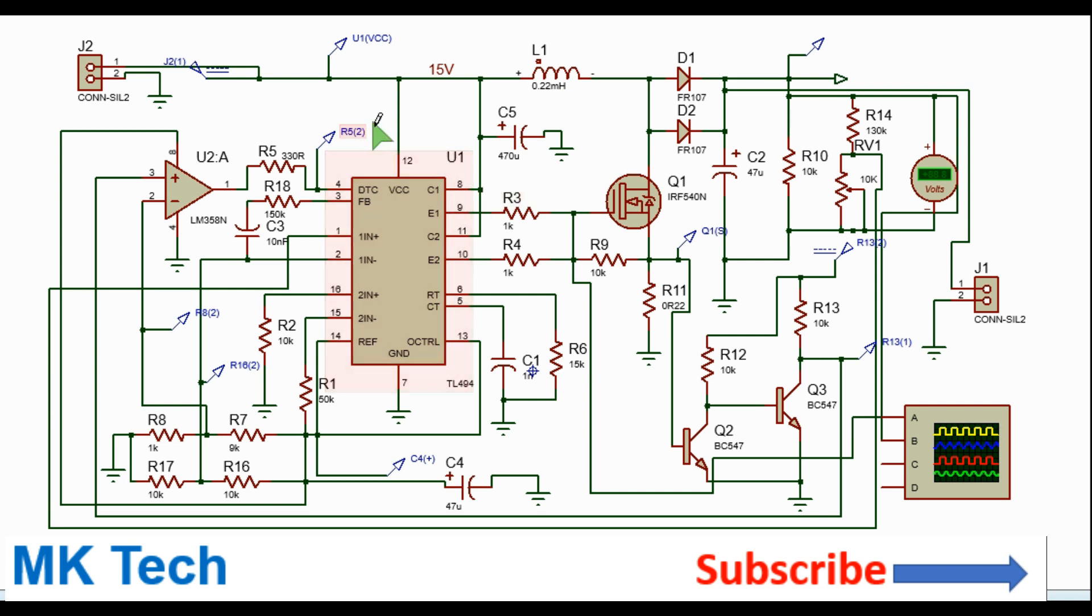So everything else is connected as shown here. So the open collectors are pulled up to the VCC, where the emitters, both of them are being used to drive the power MOSFET.